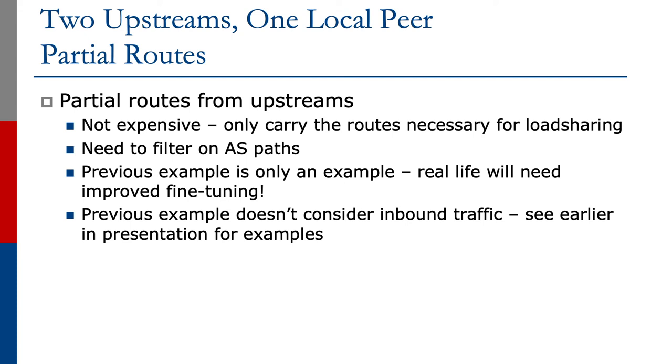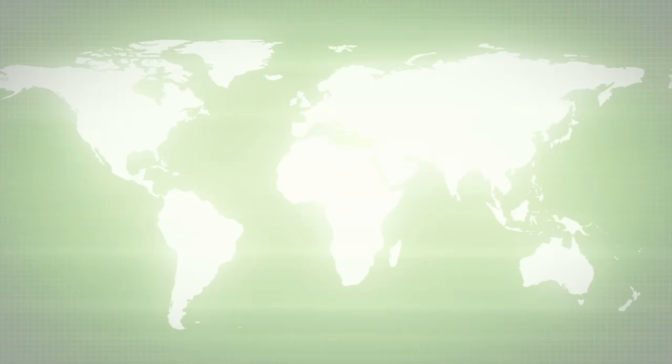With the partial route example, it's unlikely any user will notice it, unless they're doing some really delay-sensitive or time-sensitive traffic or content analysis. So the partial route solution is much preferred. Indeed, in the operations community, several operators have talked about the benefits to their network when they moved from carrying full routes for multi-homing, in an example like this, to simply using partial routes.